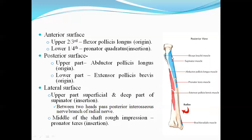The posterior surface is related to the radial nerve branch and the supinator. The pronator teres is also attached to the lateral surface. Both supinator and pronator teres are insertions on the lateral surface of the radius.